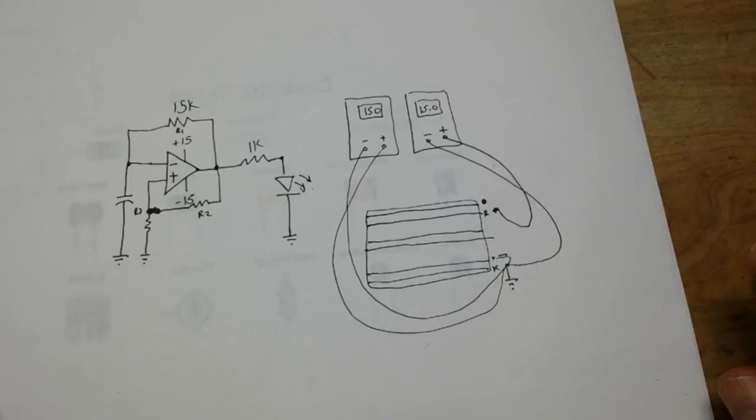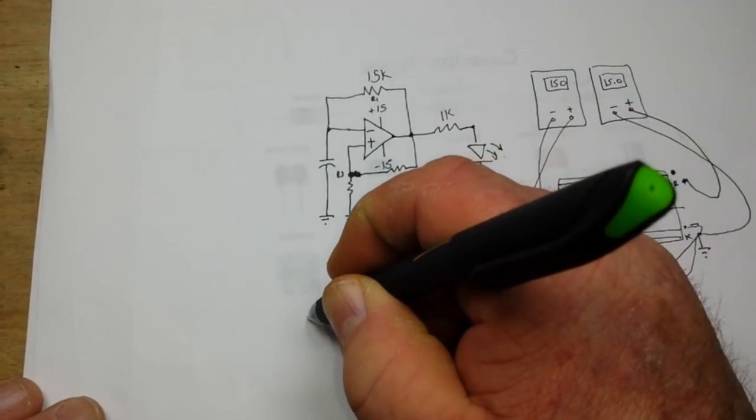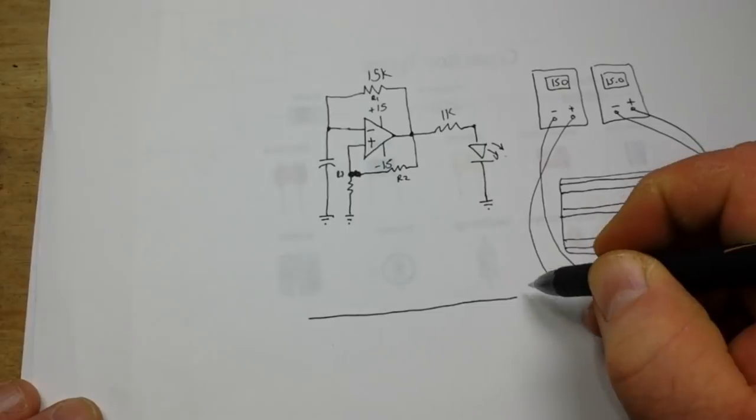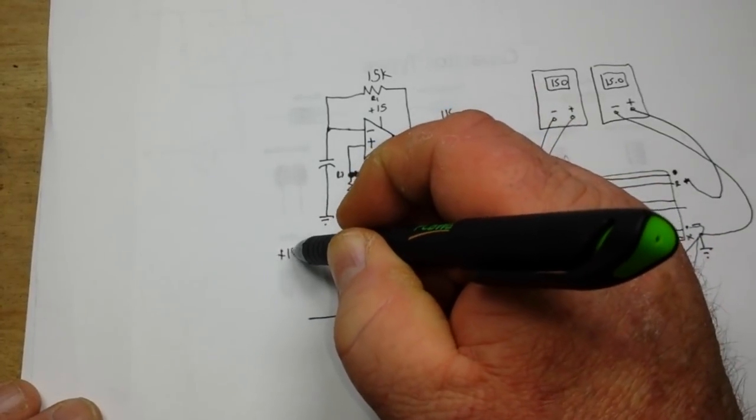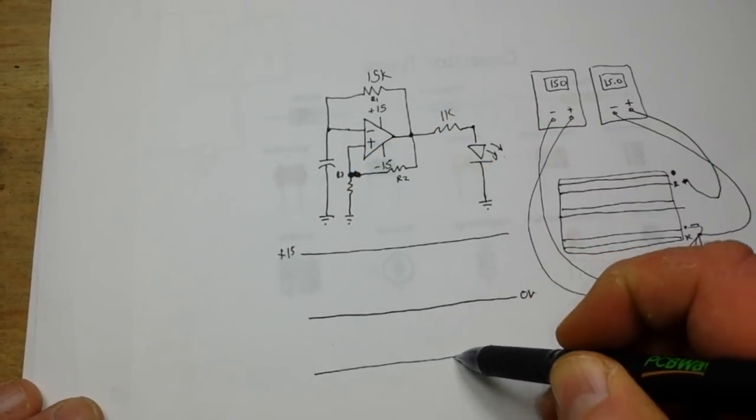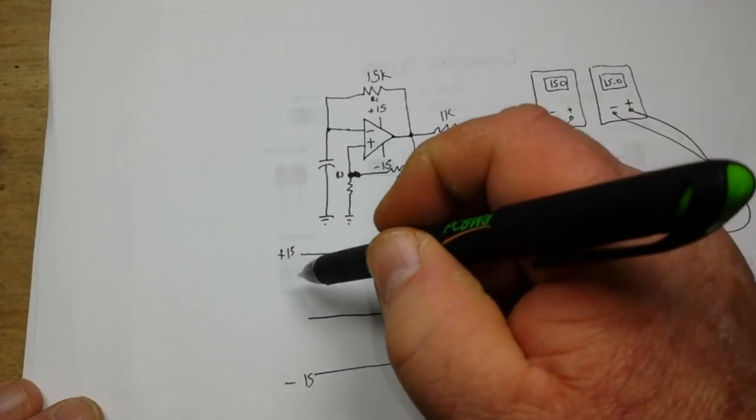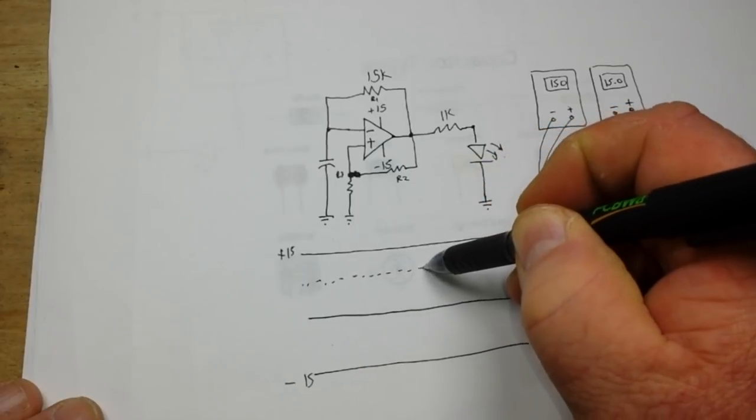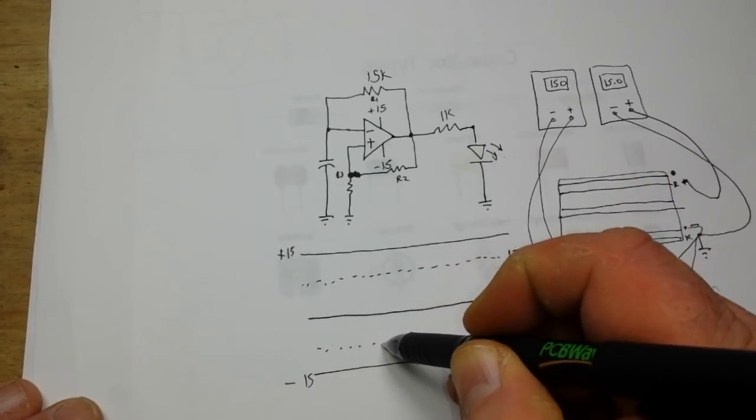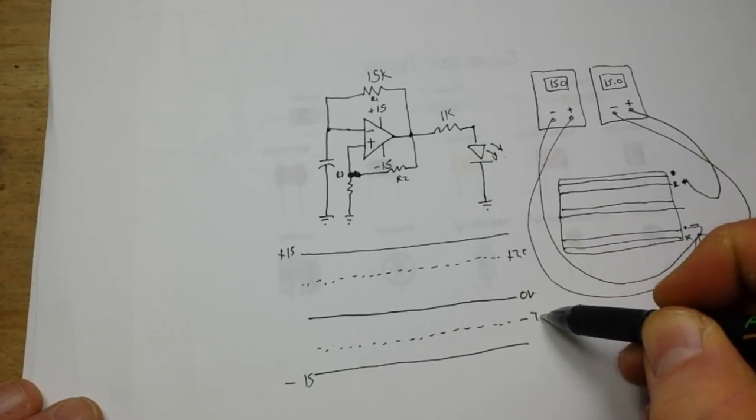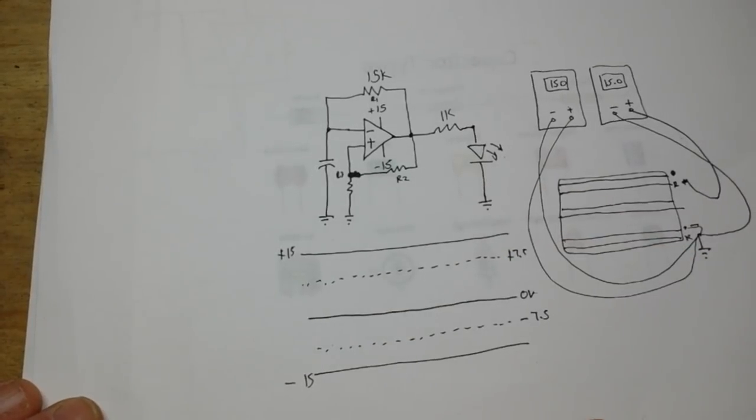Now let's talk a little bit about the math involved in this. So theory-wise, let's draw a graph here. This is 0 volt, this is plus 15, this is minus 15. And this line here, this dashed line, is going to be plus 7.5, and this dashed line here is going to be minus 7.5. And that is this threshold voltage we've created here with our voltage divider.